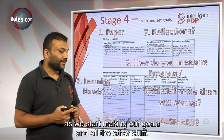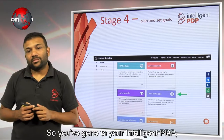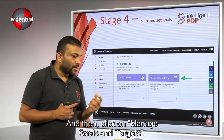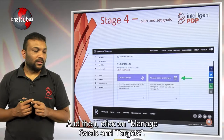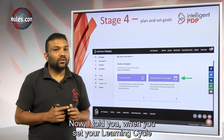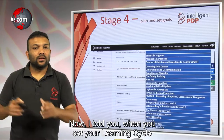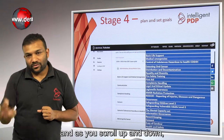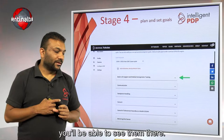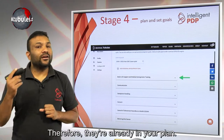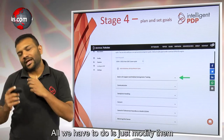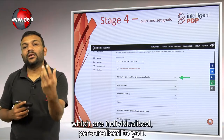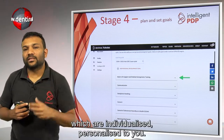Go to your Intelligent PDP, click on Goals and Targets, then click on Manage Goals and Targets. When you set your learning cycle, all these goals will automatically be there. As you scroll up and down, you'll be able to see them. They're already in your plan — all we have to do is modify them and write some things down which are individualized and personalized to you.